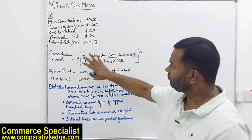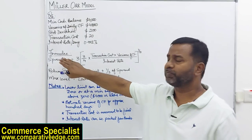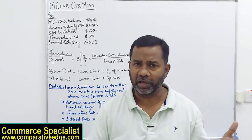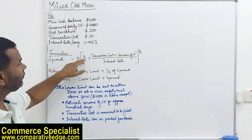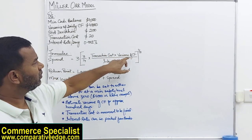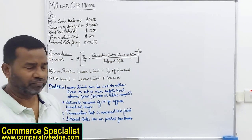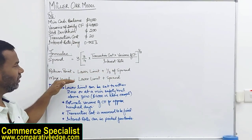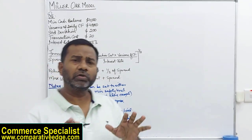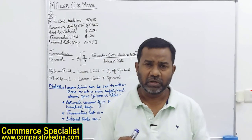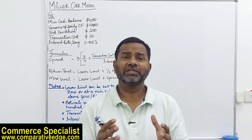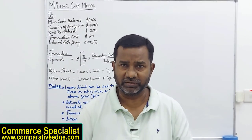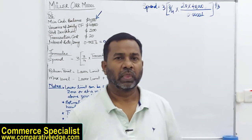We have some formulas. The first is the spread — the distance between the upper and lower cash limits — calculated as: 3 × (¾ × transaction cost × variance of cash flow ÷ interest rate) to the power of 1/3. Return point = lower limit + (1/3 × spread). Maximum level = lower limit + spread. I'll now plug in the numbers so you can see what these values mean.